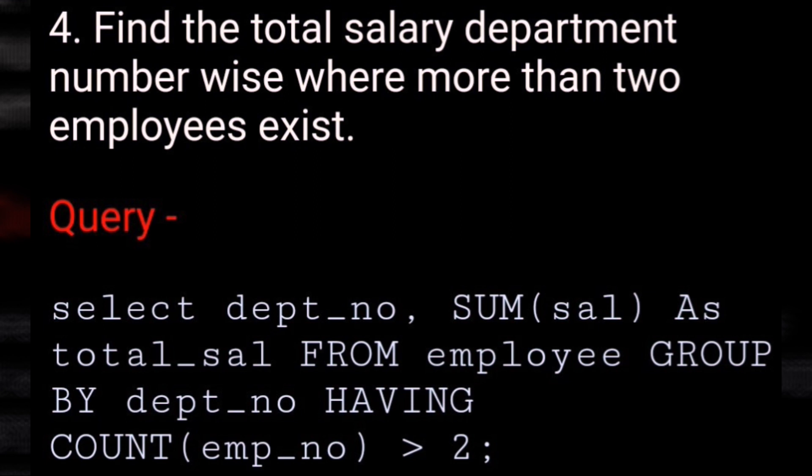SELECT department_number, SUM(salary) AS total_salary FROM employee GROUP BY department_number HAVING COUNT(EMP_number) > 2.